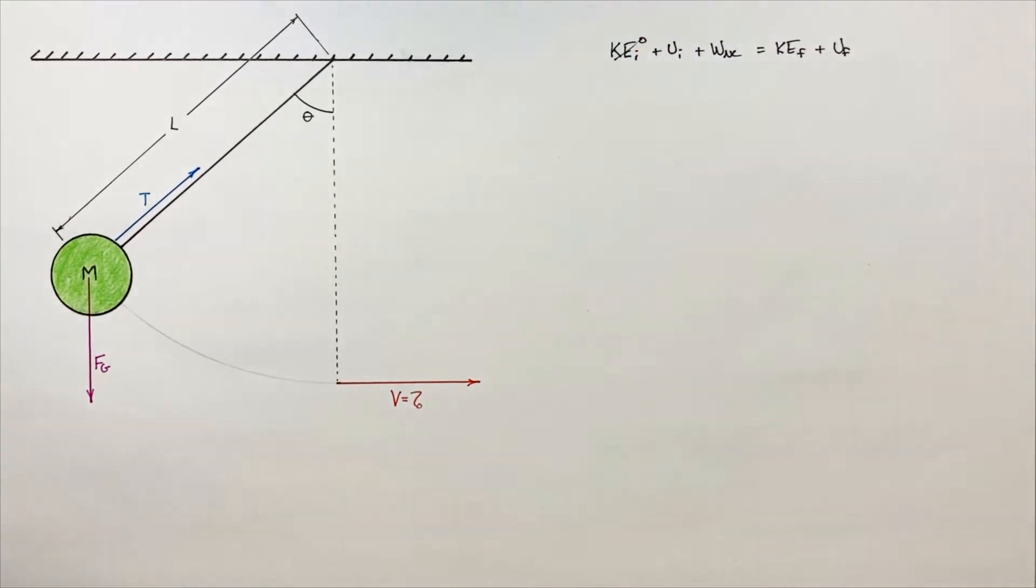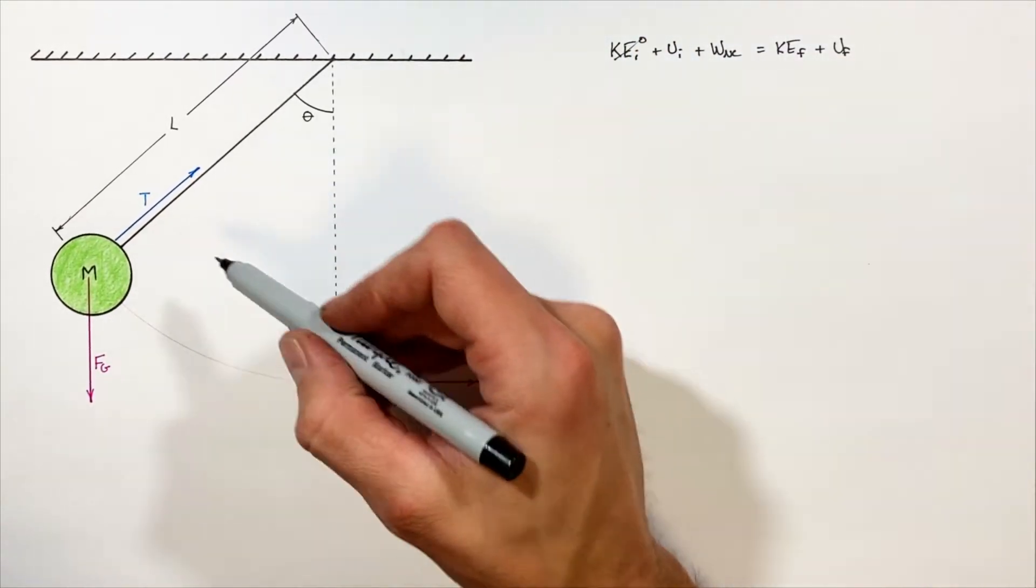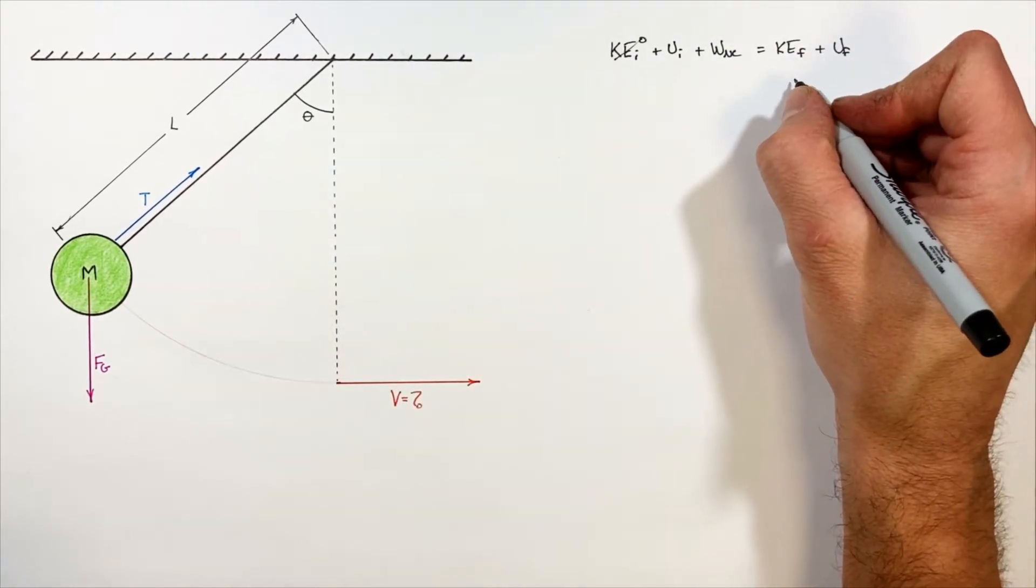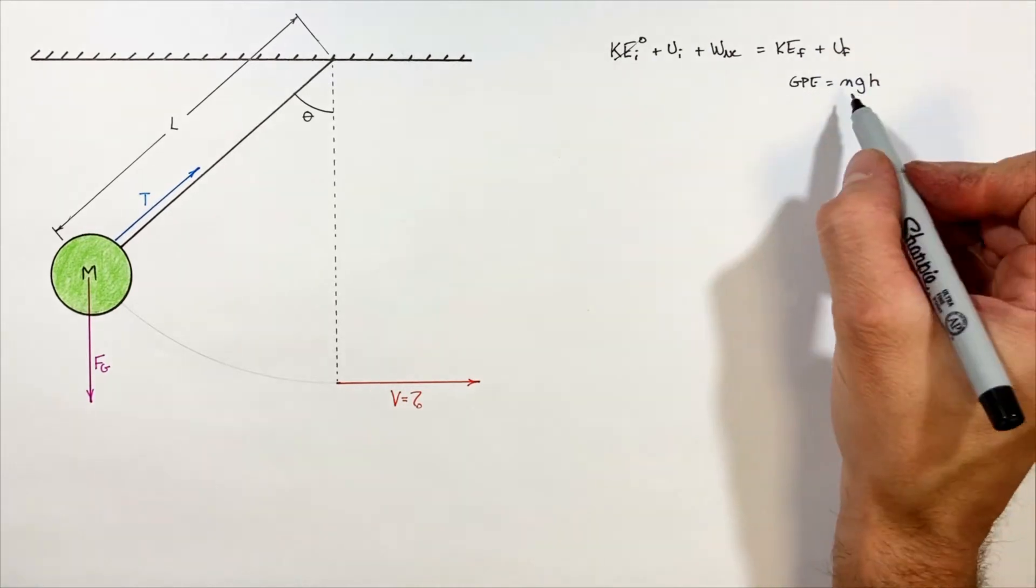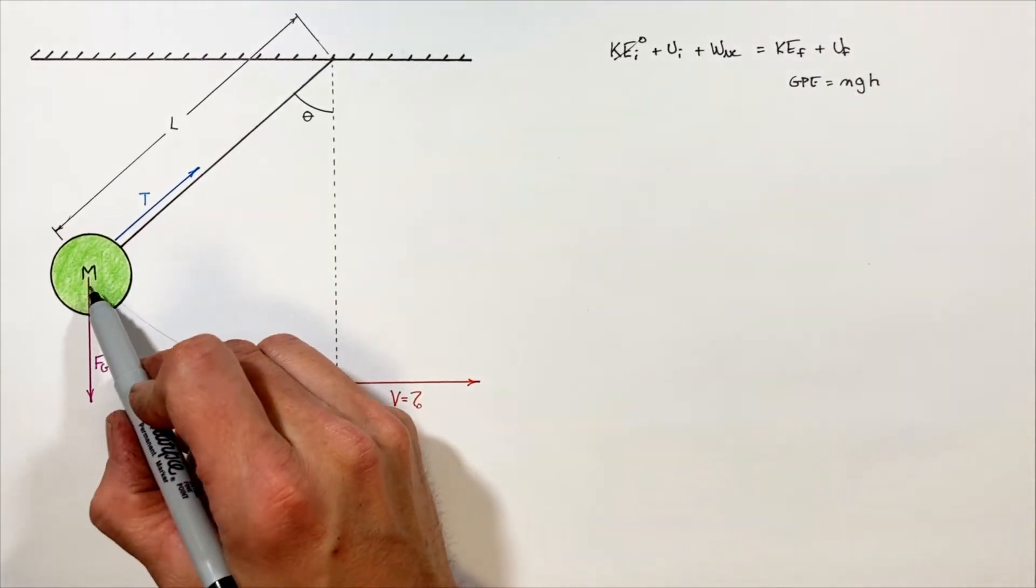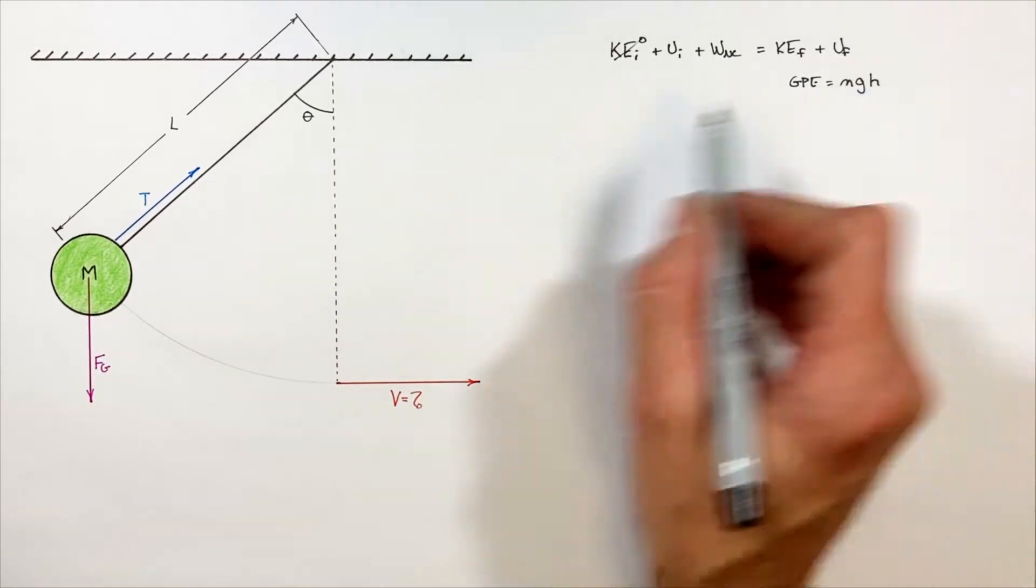This mass is released from rest, which means the initial kinetic energy is zero. Next we have the initial potential, which in this case is gravitational potential. We know gravitational potential energy is given by MGH, and that's where we run into trouble in this problem.